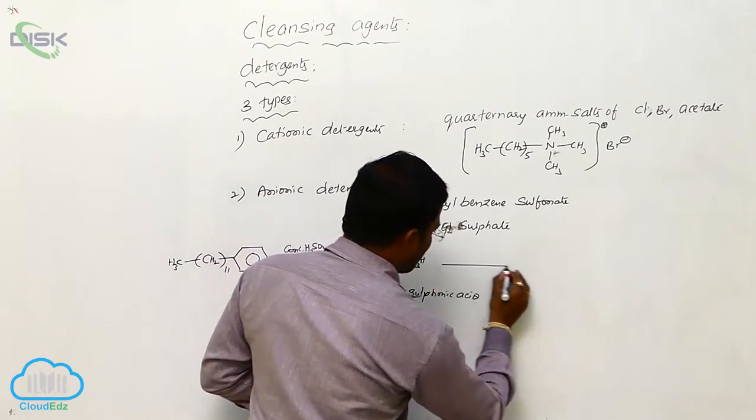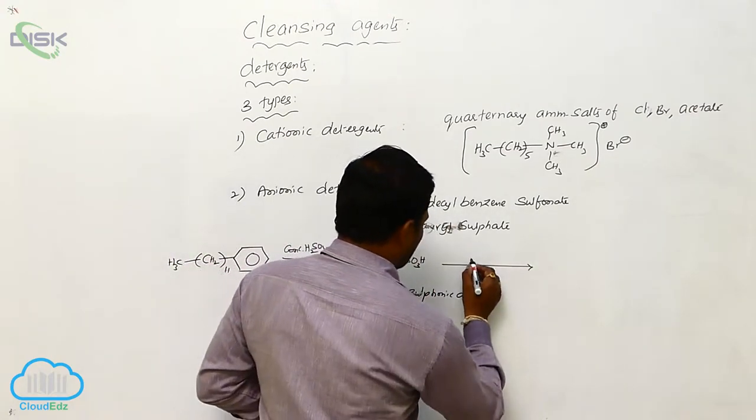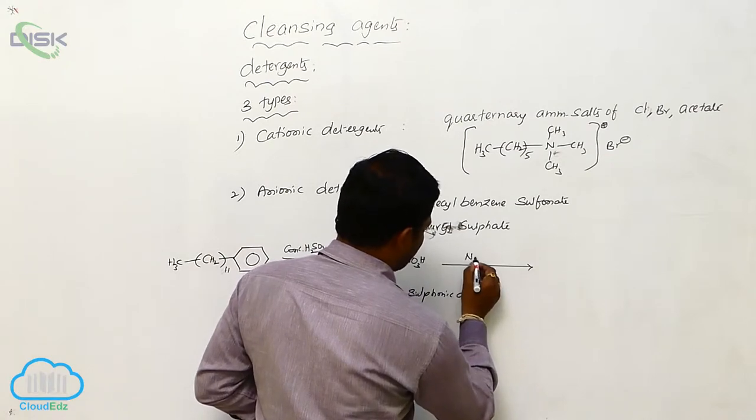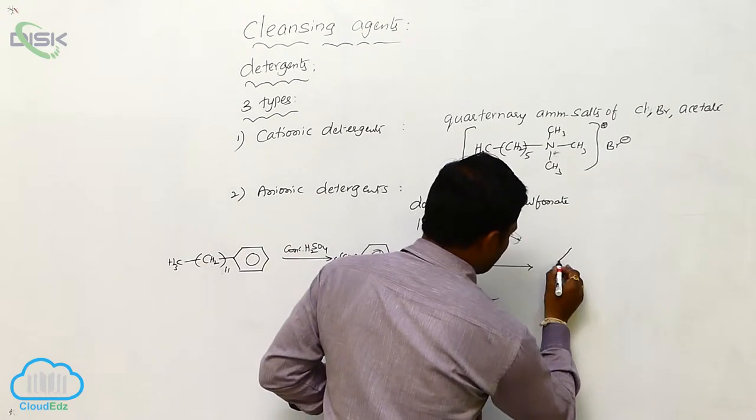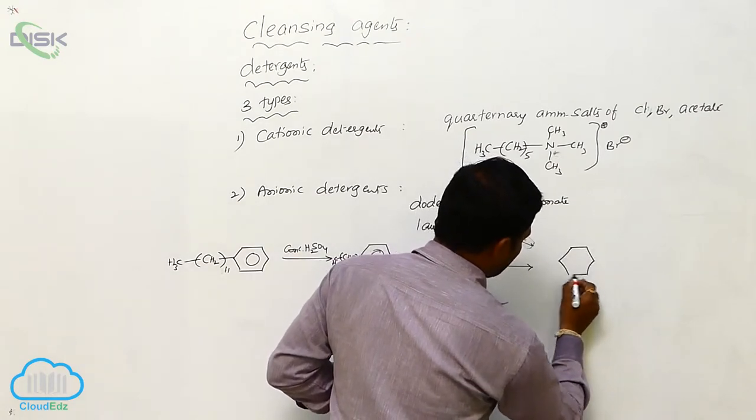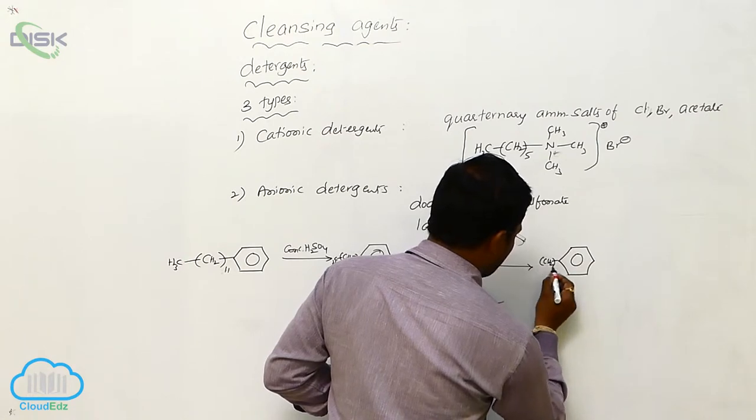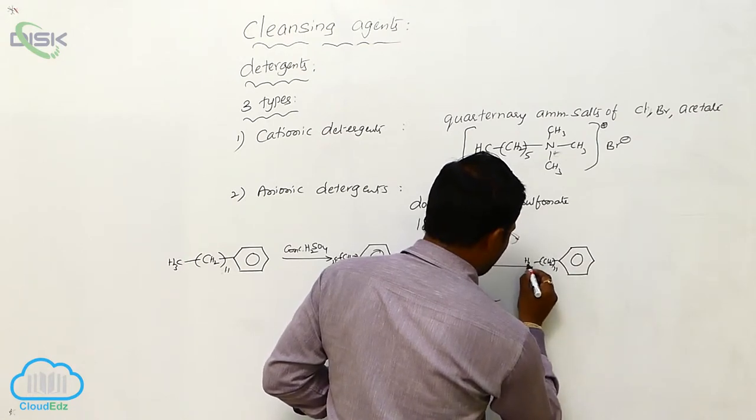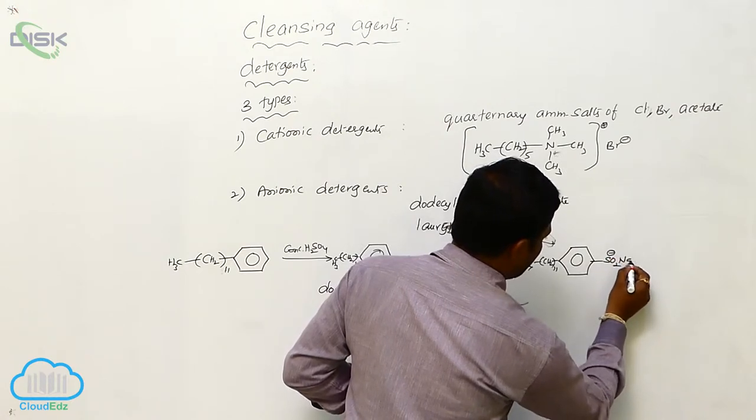Now, this dodecylbenzene sulfonic acid, when reacted with sodium salts, they produce CH2 taken 11, CH3, SO3 minus O2 minus Na plus.